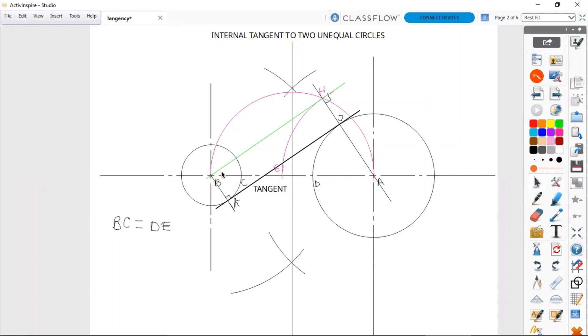Now, the interesting thing is that in order to obtain the internal tangents to the two circles, we have to draw a parallel line to the first tangent line we drew in green.